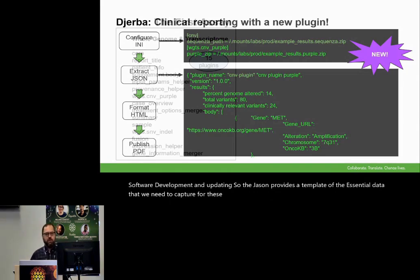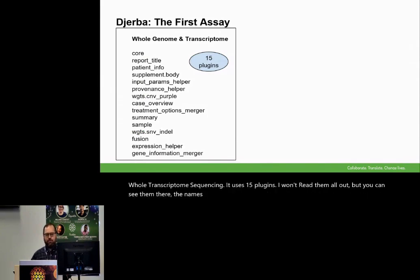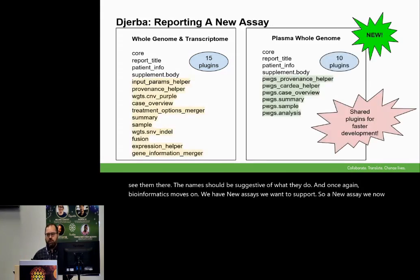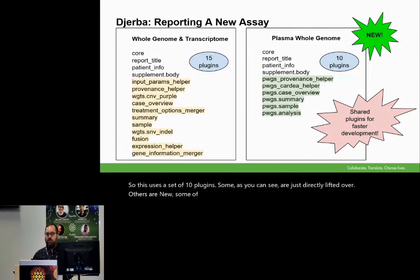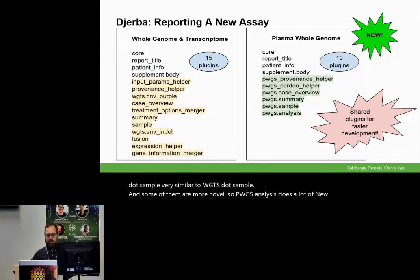The first assay we implemented using GERBA was whole genome tumor-normal and whole transcriptome sequencing. It uses 15 plugins — the names should be suggestive of what they do. Bioinformatics moves on and we have new assays we want to support. A new assay we now have is plasma whole genome, where we sequence plasma samples to detect minimal residual disease. This uses a set of 10 plugins. Some are directly lifted over from the previous assay; others are new. Some of the new plugins are very closely based on the old ones — for example, pwgs.sample is very similar to wgts.sample — while some, like pwgs.analysis, do a lot of new stuff that we didn't need to do before.